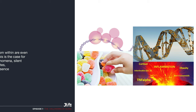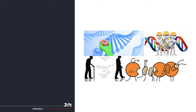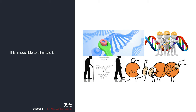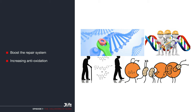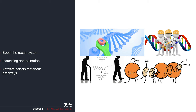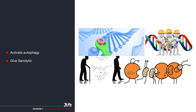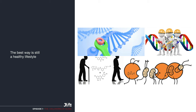What can be done to reduce or eliminate those damages? It is impossible to eliminate them entirely, but we can boost the repair system, reduce oxidation by increasing antioxidation, activate certain metabolic pathways, activate autophagy, or give what we call senolytics. But the best way is still a healthy lifestyle.